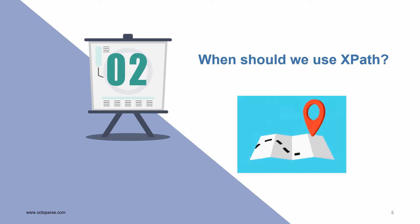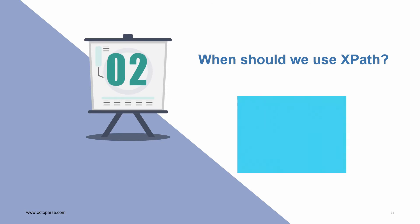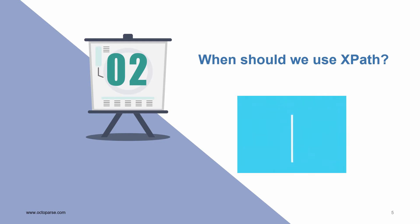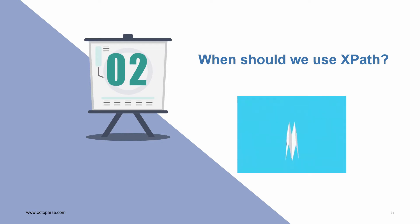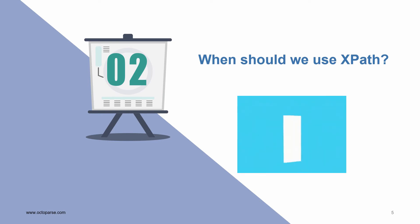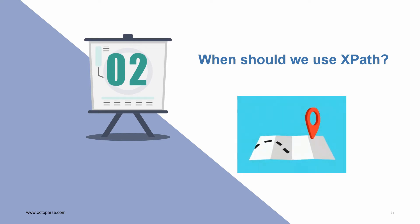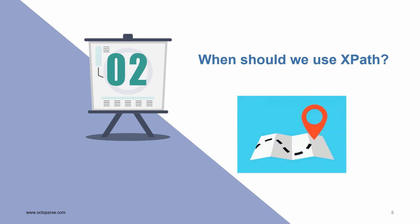When should we use XPath? When a web scraper cannot locate the selected field, you need to write an XPath expression to tell Octoparse to go and get the element by defining its specific location in the HTML. You can think of XPath as a GPS system, which helps you get to your destination by finding the right path. For example, you want to get the product name on a page, but somehow your scraper extracts the seller's information instead. As an alternative, you need to write an XPath to help the scraper find the right element.